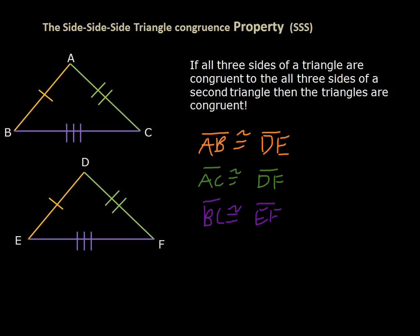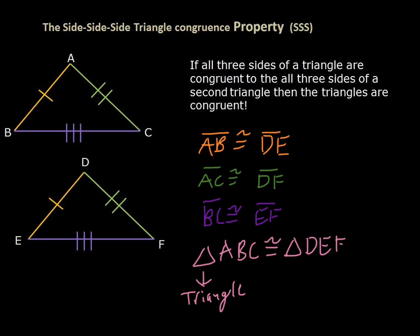Now we know that these two triangles are congruent by the Side-Side-Side property. We write that as: triangle ABC is congruent to triangle DEF, by SSS. We can abbreviate this property as SSS — Side-Side-Side. That's the Side-Side-Side property, and we'll be doing some of these on the worksheets.